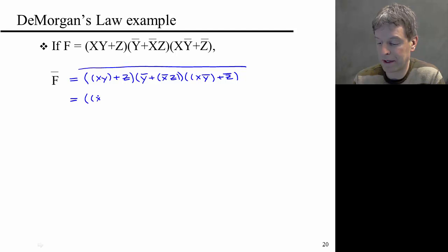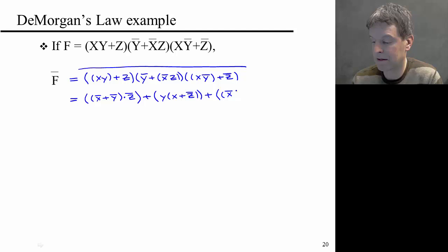So this should give me not X or not Y and not Z, or Y and X or not Z, or not X or Y and Z.